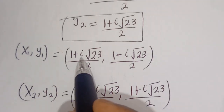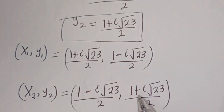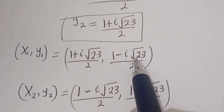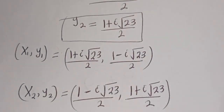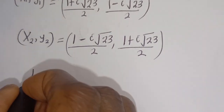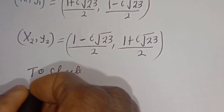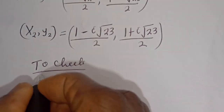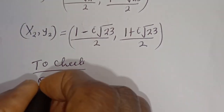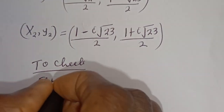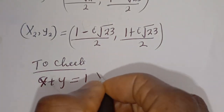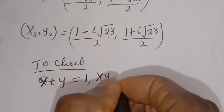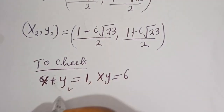You can see that x1 is equal to y2 and y1 is equal to x2. We can check to confirm if this answer is right or wrong. Let's check. To check, we have the given equations: x plus y is equal to 1, and x times y is equal to 6.